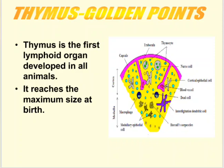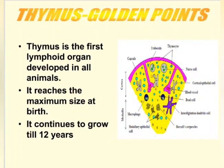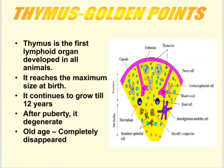The thymus is one of the first lymphoid organs to develop in all animals. Among all lymphoid organs, the thymus is the first to develop at birth, and it reaches its maximum size at birth. The thymus continues to grow until the age of 12 years. After a person reaches puberty, the thymus gland slowly undergoes degeneration. When people reach old age, the thymus gland completely disappears, which is why old age people have less immunity.